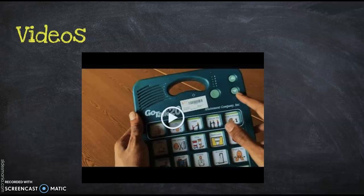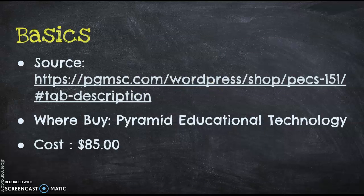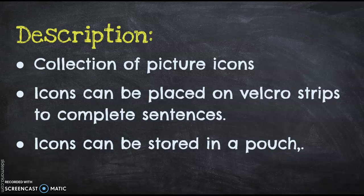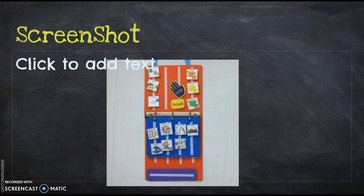Low-tech types of communication: text communication book. You can find that at Pyramid Educational Technology. The cost is around $85. Description of it is that there's picture icons, icons can be placed in Velcro strips to complete sentences, icons could also be stored in a pouch.